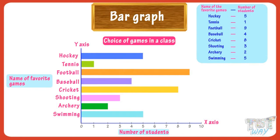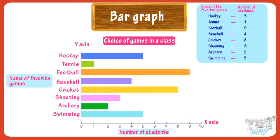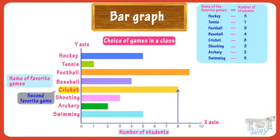This is a graph where the rectangular bars are drawn horizontally on the y-axis and the scale is drawn on the x-axis. The graph shows that the favorite game of students is football, as the bar corresponding to football is the longest and the length of the bar is 9 — that is, 9 students like football. The least favorite game is tennis, and only one student likes tennis the most. The second most favorite game in the class is cricket, as 8 students like cricket the most.